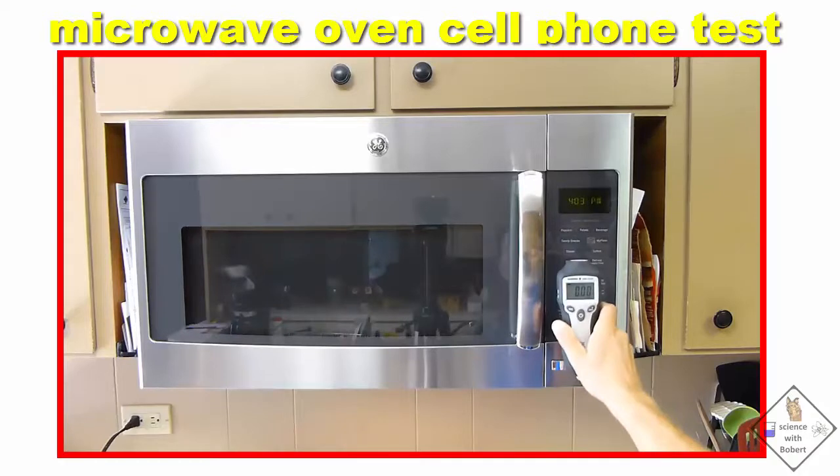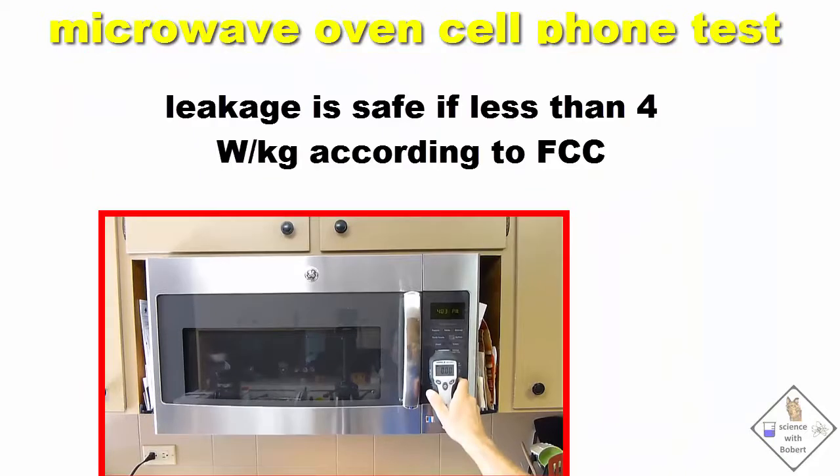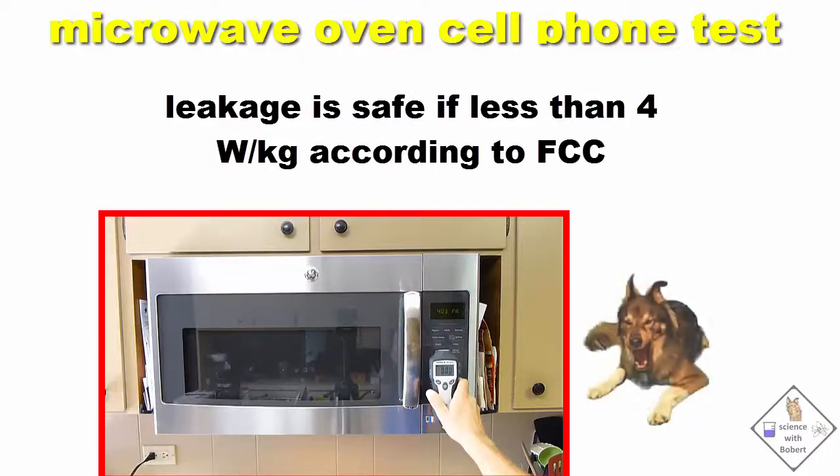As long as any leaked microwave radiation is below 4 watts per kilogram, as read on the microwave radiation detector, the United States Federal Communication Commission, or FCC, has rated the microwave oven as safe to use. Still, I don't like knowing my microwave oven is leaking. That bites.